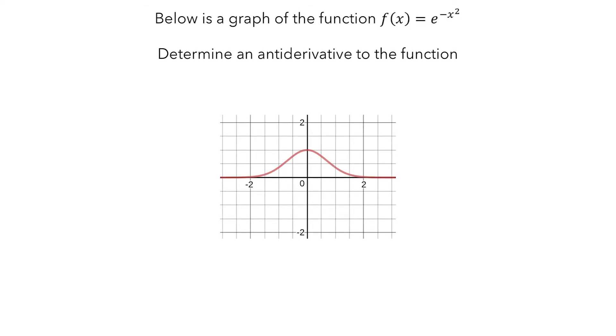In this video, you will see Julian and Alyssa work with the function e to the negative x squared and try to determine an antiderivative. As they work, consider the obstacles they encounter and think about how you might solve the problem.